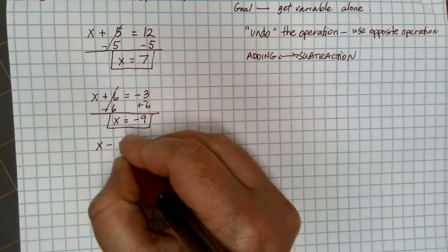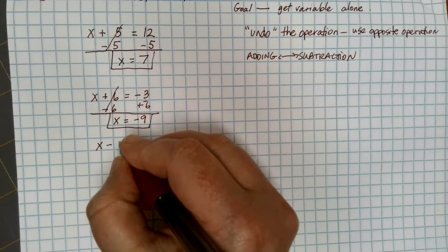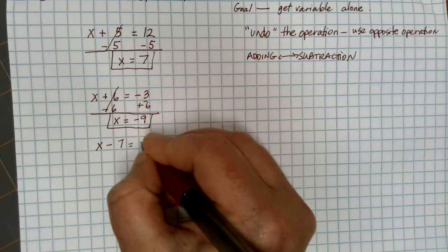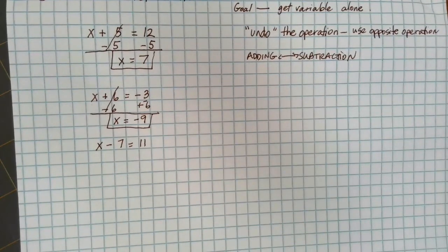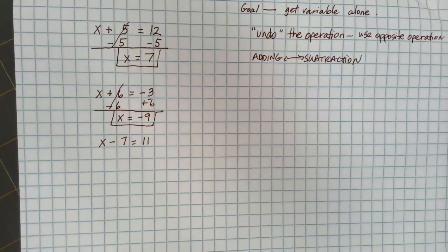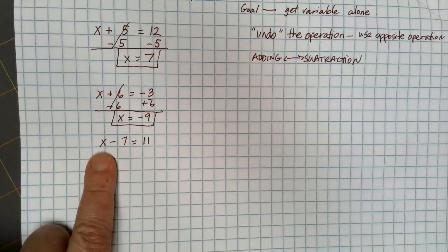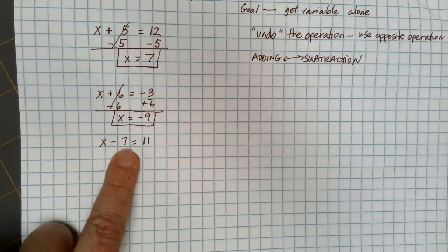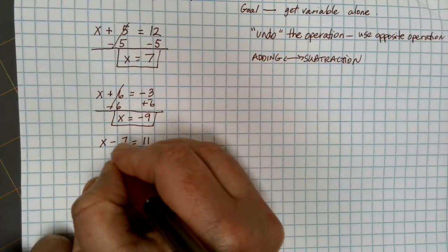Now, what happens if we have something like x minus 7 is equal to 11? This time, my goal is still to get the variable alone. I have the x.